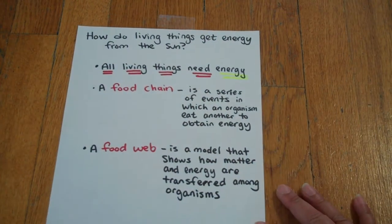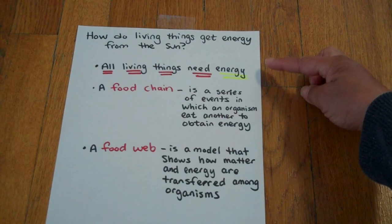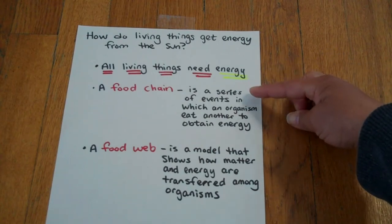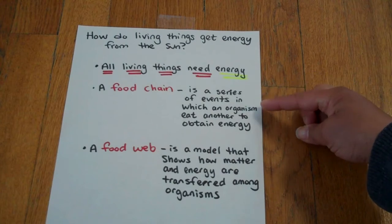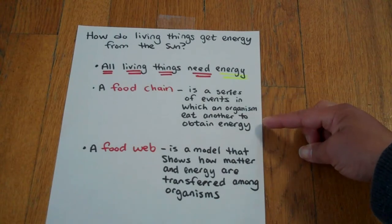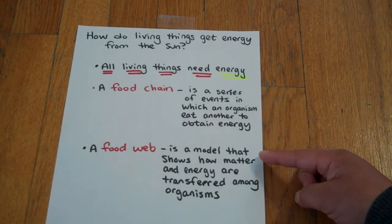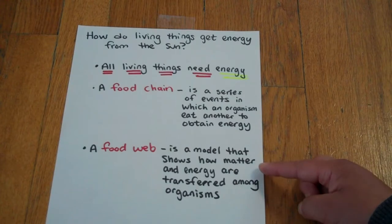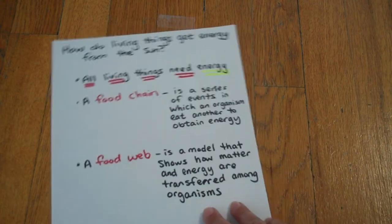How do living things get energy from the sun? All living things need energy. A food chain is a series of events in which an organism eats another to obtain energy. A food web is a model that shows how matter and energy are transferred among organisms.